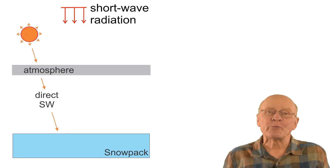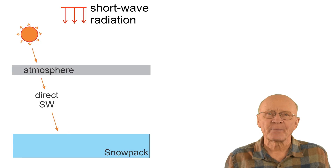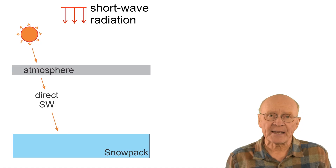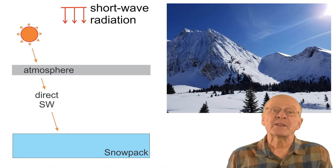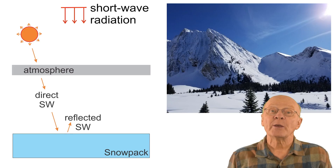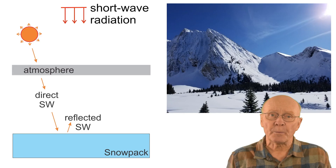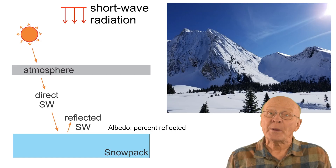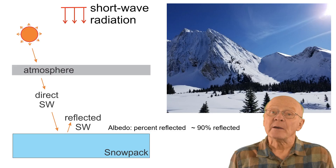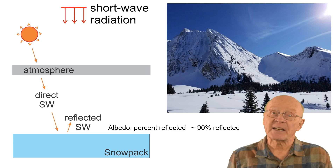Now let's do a shallow dive into the radiation exchange at the snow surface, starting with shortwave radiation. Most of the radiation from the sun that penetrates the atmosphere is shortwave radiation, much of which we can see with our eyes. On days when there are no clouds, much of the direct shortwave radiation reaches the earth's surface and casts distinct shadows. When shortwave radiation reaches the snow surface, most of it reflects off. This is why you can get a sunburn on the underside of your chin while moving over snow. This percentage of shortwave radiation that is reflected is known as the albedo. The albedo varies with the size of the snow grains, moisture, and particles on the snow surface, but is typically around 90%. Fresh dry snow can reflect around 95%, which is why on sunny days with fresh dry snow you may find yourself squinting, even while wearing sunglasses.